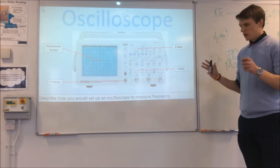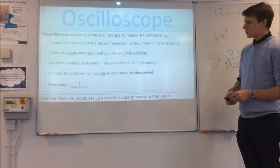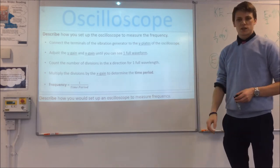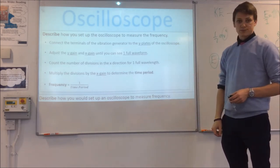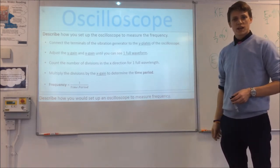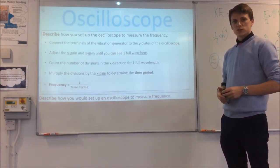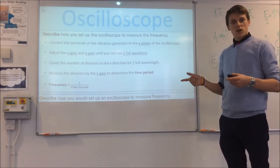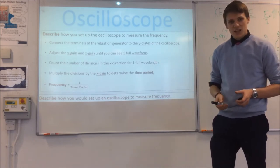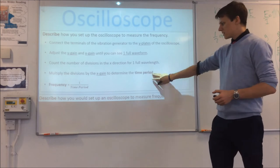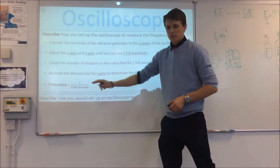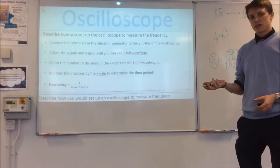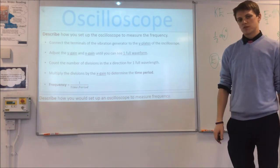So let's quickly summarise that. Connect your vibration generator up to the Y plates of your oscilloscope. Adjust your X and Y gain to values that make a clear waveform on your screen. Count the number of divisions in the X direction for one time period, multiply by the X gain — the number of milliseconds per division — to get the time period. Flip that over and you get the frequency. That's how you measure the frequency of your vibration generator to investigate the relationship between your variables.